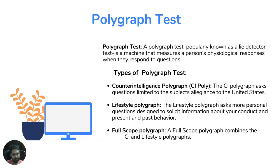Understanding the hierarchy is important: if a position requires TS/SCI with CI polygraph, you can submit a candidate with Top Secret plus Full Scope polygraph, because Full Scope automatically covers CI. Similarly, if a position requires Secret clearance and your candidate holds Top Secret, you can submit them. But if the position requires Top Secret and your candidate only has Secret clearance, you cannot submit that candidate.